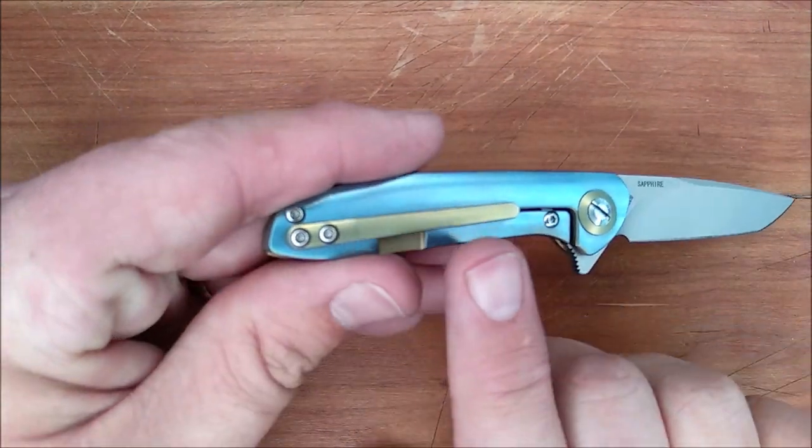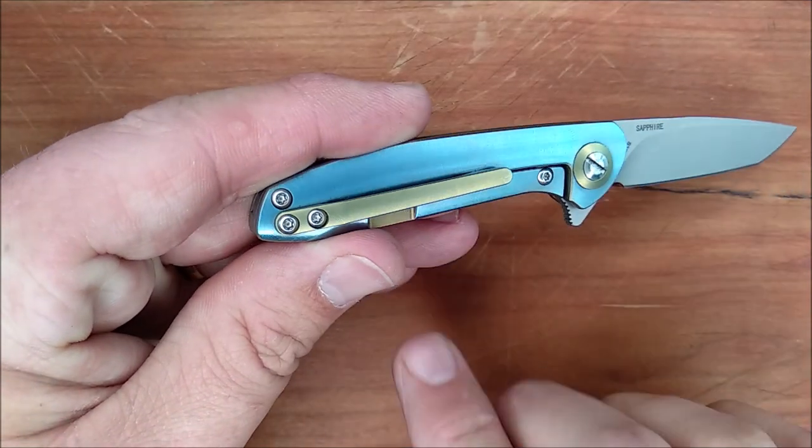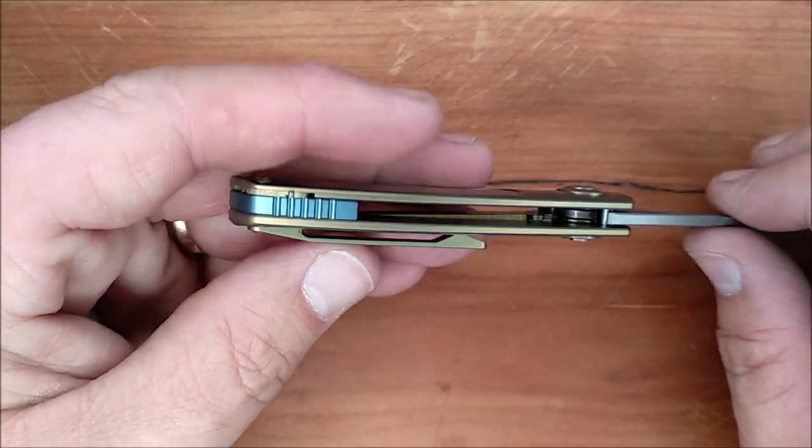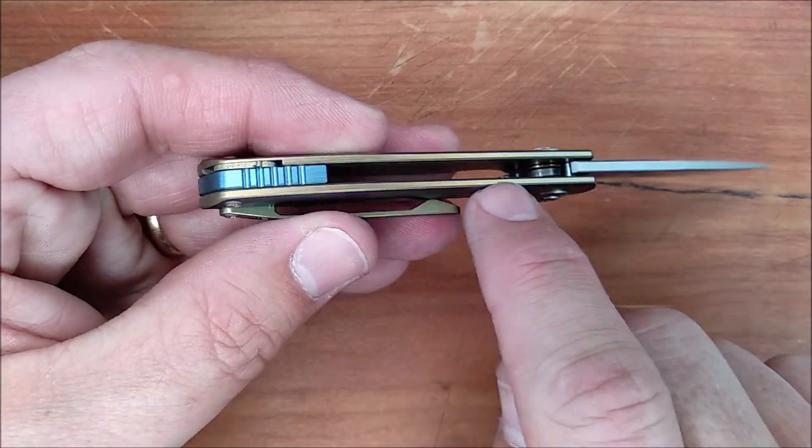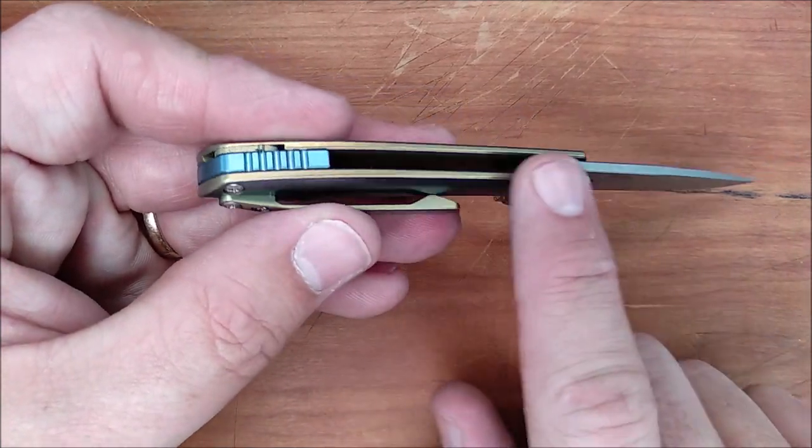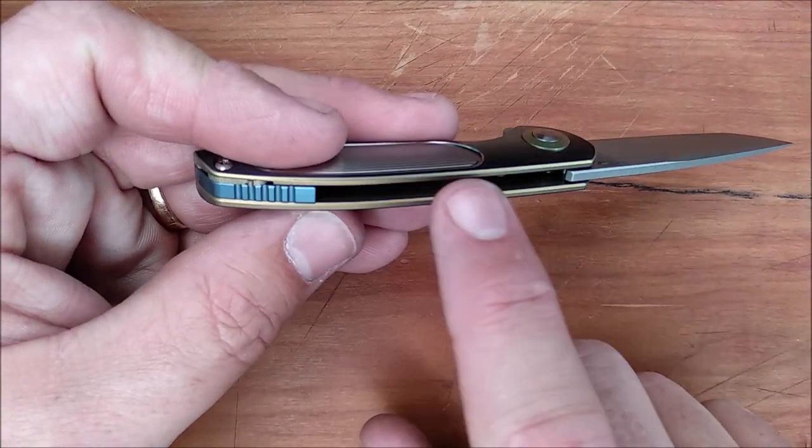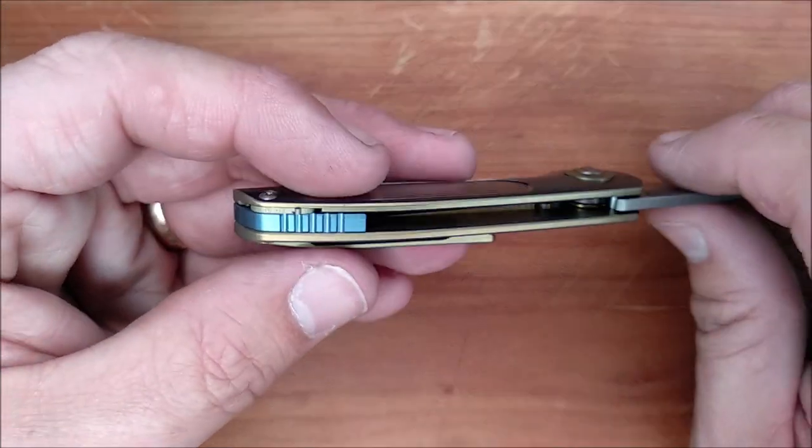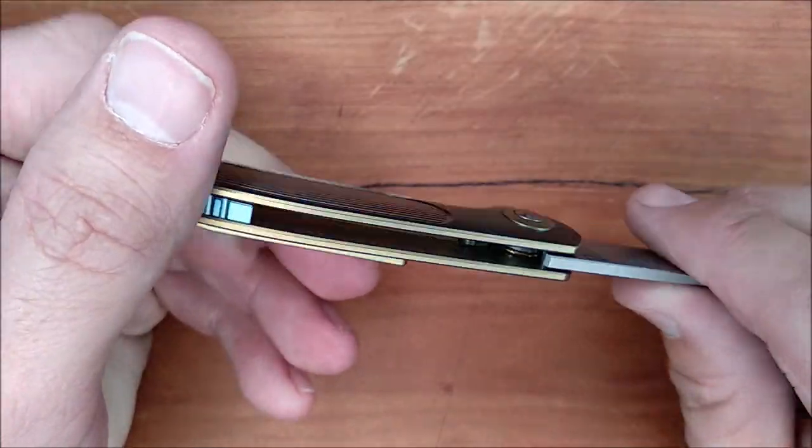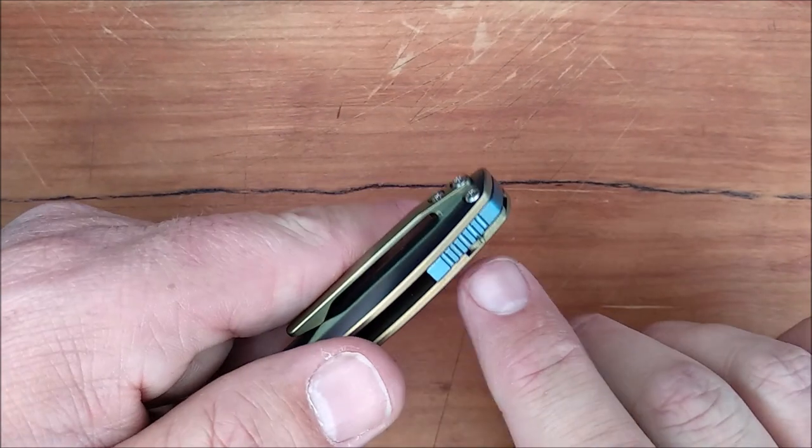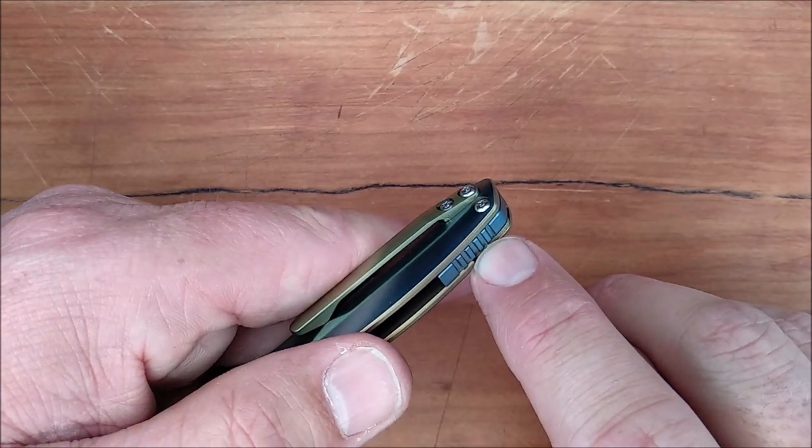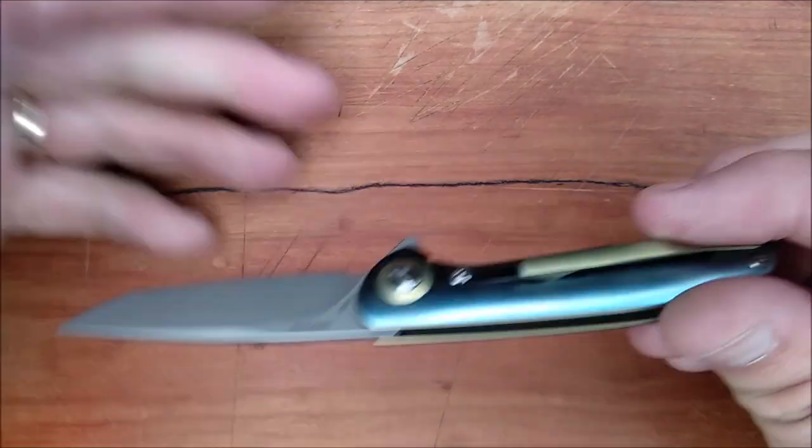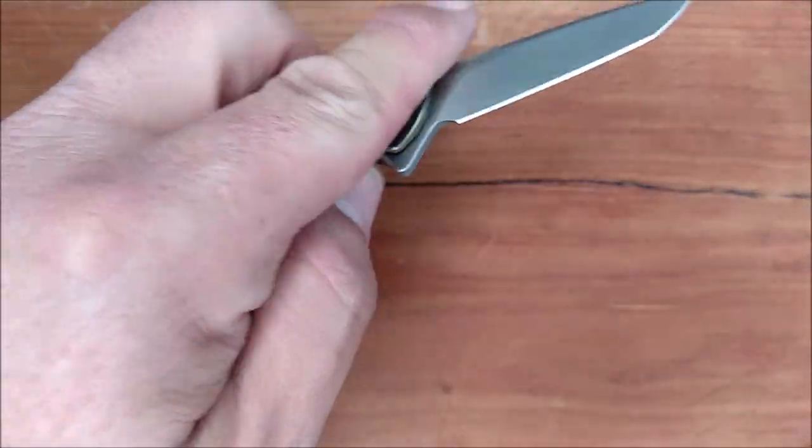A little bit radius on the pocket clip here. That's really nice. Everything's nicely rounded, nicely smoothed out. Radius on the end of the sides of the liners here, the frame lock. Really nice. The only jimping is this tiny little bit of stuff here on the backspacer and that little bit on that flipper tab.